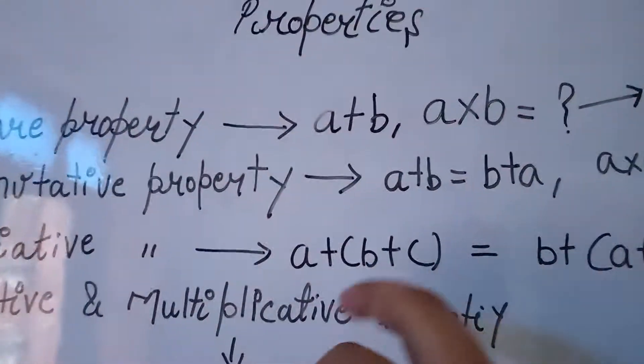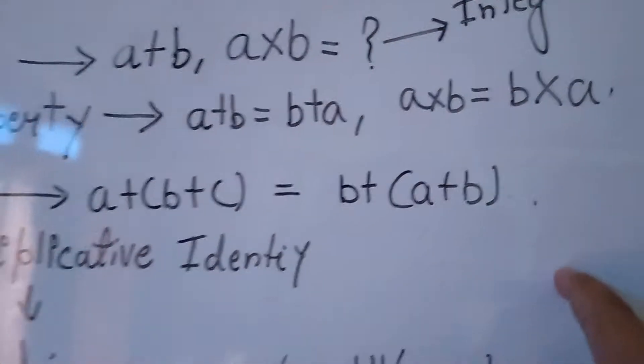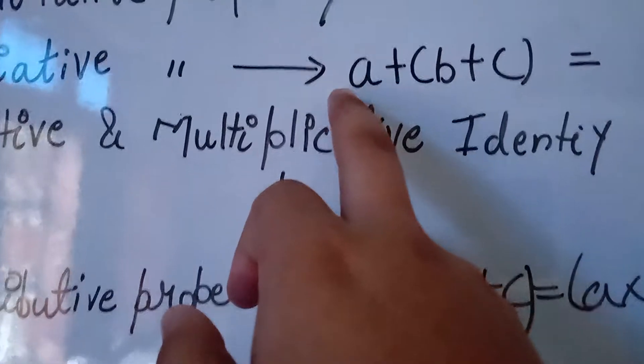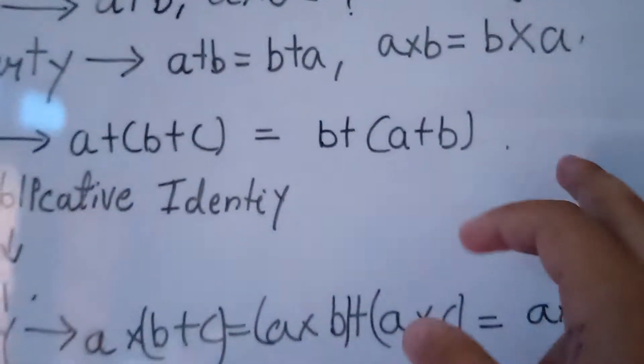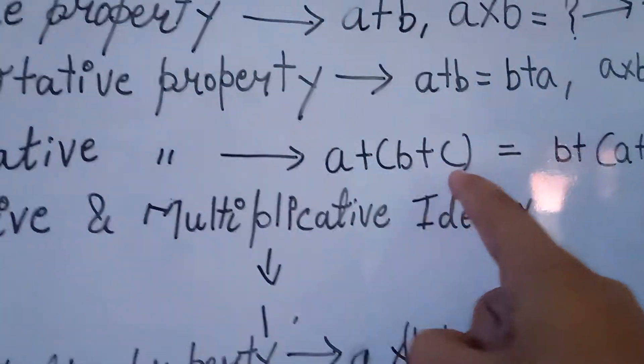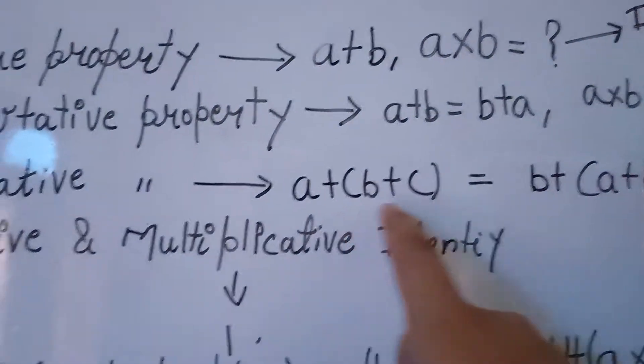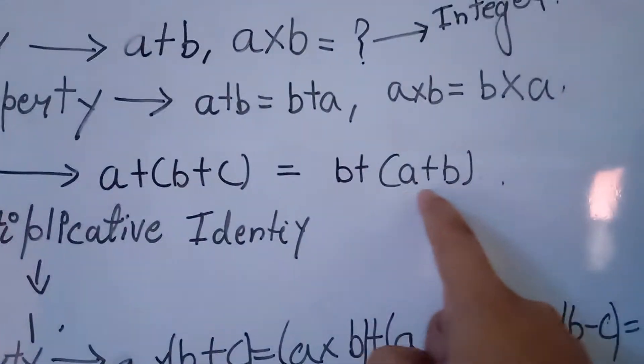Associative property: a plus b plus c, then b plus a plus b. A into B into C is equal to B into A into B. This means if you add A to B into C, like 2 plus 5 plus 2, 10 plus 12, or 5 plus 2 plus...